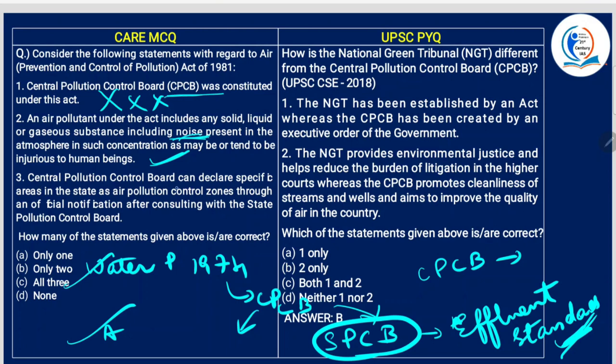Regarding the third statement: the Central Pollution Control Board can declare specific areas in the state as air pollution control zones through an official notification after consulting with the State Pollution Control Board. Since SPCB is already in place, SPCB will look into this particular function — it is not CPCB. So this is wrong.